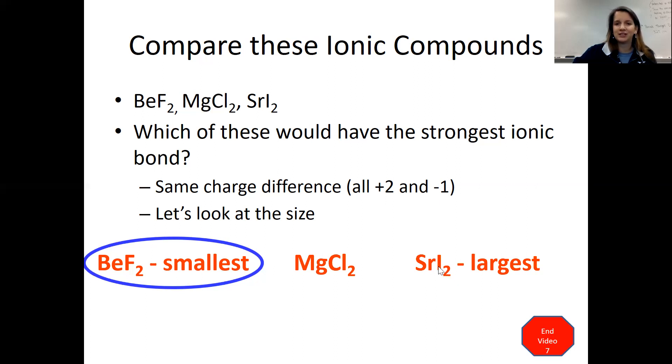Anyways, the BeF2 is going to be your smallest ionic compound, which means it's going to have the strongest ionic bond because those nuclei are closer together than they are with the SrI2.